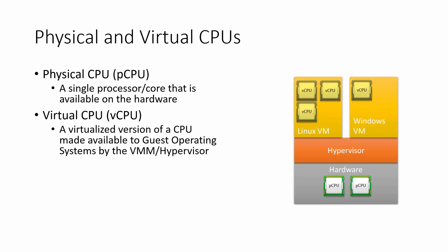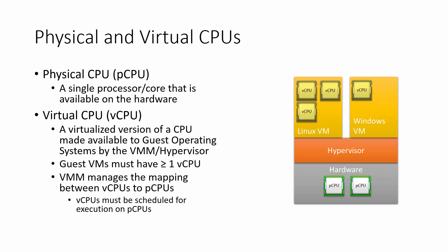In the example on screen, the hardware has two physical CPUs and we have a total of four virtual CPUs — three assigned to the Linux VM and one assigned to a Windows VM. Guest virtual machines must have at least one vCPU, and the hypervisor or VMM manages the mapping between vCPUs and PCPUs. Therefore, these virtual CPUs must be scheduled for execution on the physical CPUs.